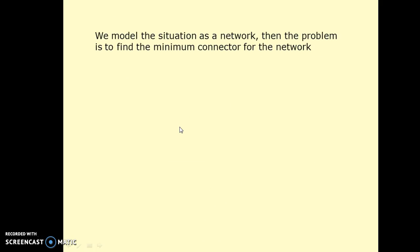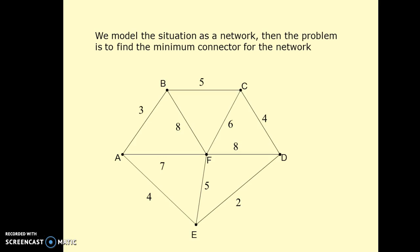Now we model the situation as a network. Then the problem is to find the minimum connector for the network. So we replace these towns with vertices A, B, C, D, E, and F.